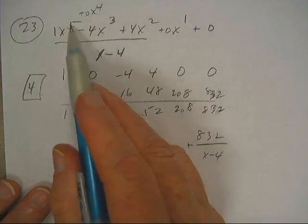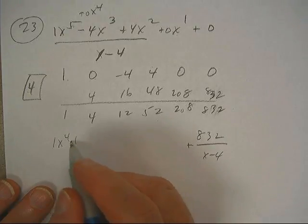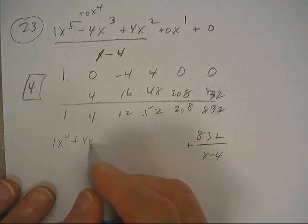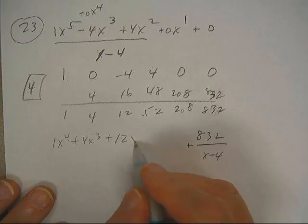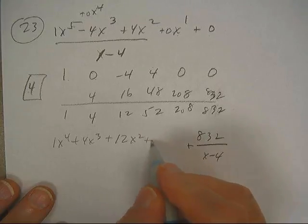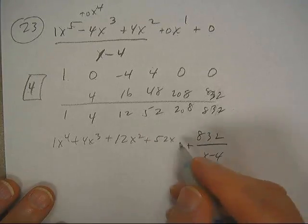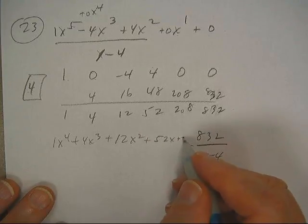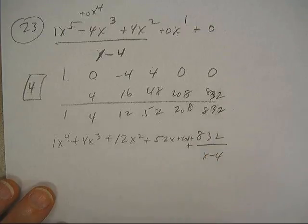This started off with fifth degree, so this is 1x to the fourth plus 4x cubed plus 12x squared plus 52x plus 208, plus the remainder.